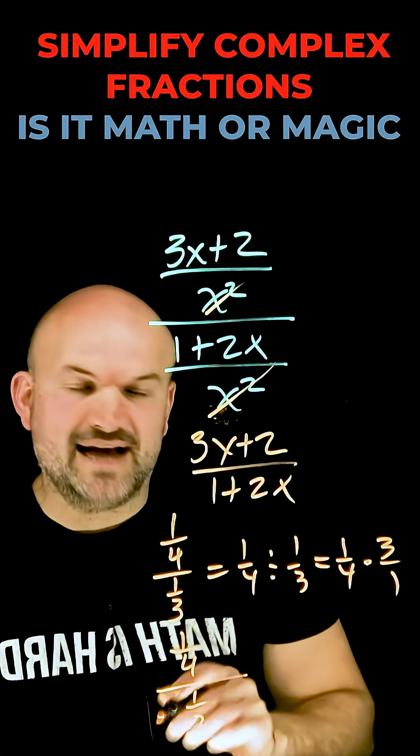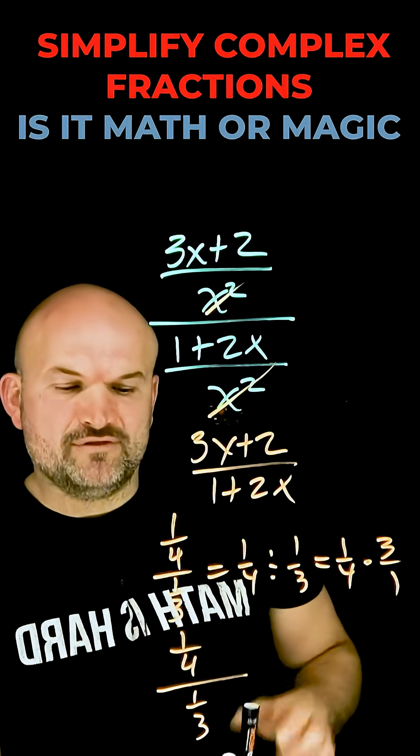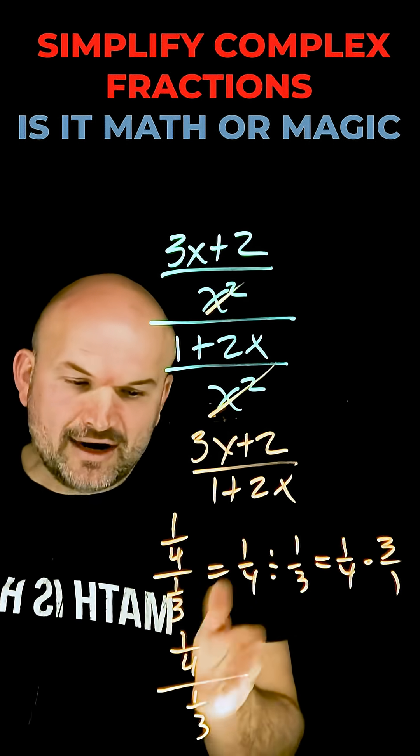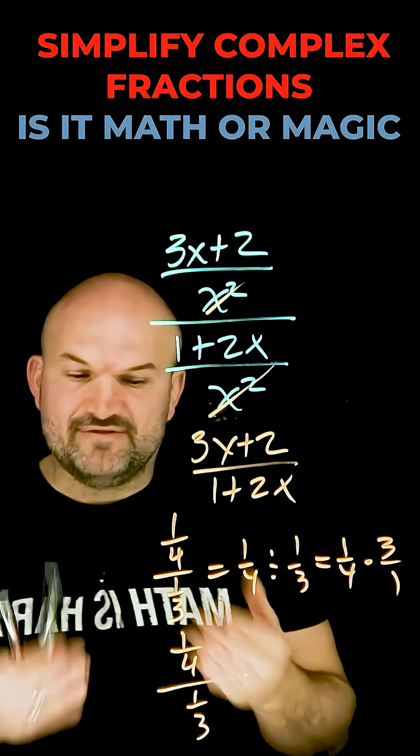But in my opinion, I prefer one more different way to look at it. If I have one-fourth divided by one-third, I don't want to divide by one-third. I want to divide by 1, right?